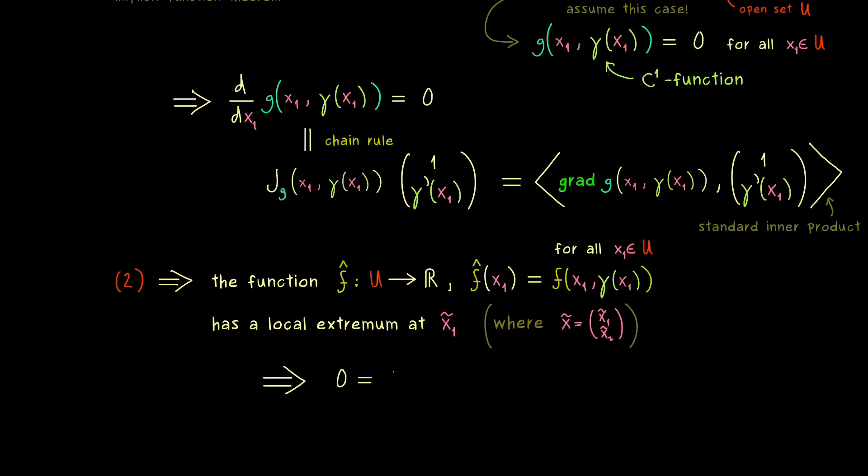This is really simple. We know that the derivative at this given point has to vanish. So in other words here we can use the chain rule again. So we get the same calculation as before. But instead of the gradient of g we get the gradient of f. And most importantly we have everything here at the point x₁̃. However at this point we know that γ(x₁̃) is exactly x₂̃.